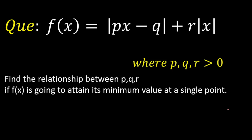Hello everyone. Today we're going to look at a nice problem from functions. This question was asked in IIT JEE in 1999. So in this question, f of x is given as modulus of (px minus q) plus r times modulus of x. Here p, q, r are some positive real numbers. The question is: find the relationship between p, q, r if f of x is going to attain its minimum value at a single point.